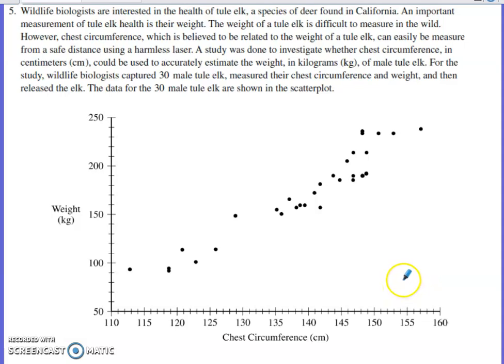So the situation presented here, we have this scatter plot. The scatter plot is going to allow us to relate on the x-axis the chest circumference of a certain species of deer, tule elk, found in California. It relates the chest circumference measured in centimeters with the weight measured in kilograms on the y-axis. It's difficult to weigh this species of deer - they would have to capture the deer, weigh them, and then release them. But what's easy to do when they're in the wild is to measure their chest circumference with a harmless laser.